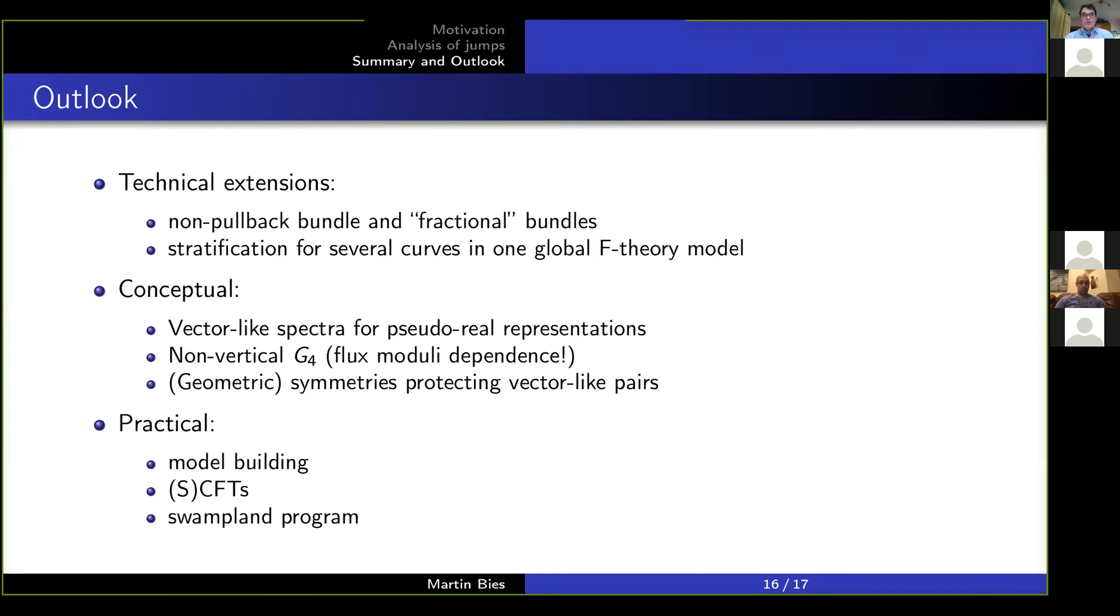So one way to consider here is to take non-pullback bundles into account or to consider stratifications of all the matter curves in your F-theory compactification at the same time. Also, more conceptual questions, say, for example, regarding non-vertical G4 fluxes and how they influence the vector-like spectra. Or, let's say, a more practical approach, simply take, for example, the H0Approximator, apply to model building and see what you find. It's all possible lead-offs from this work and hopefully you can very soon read about this in the future. Right. So, that is what I wanted to say. I hope I didn't take too much time.